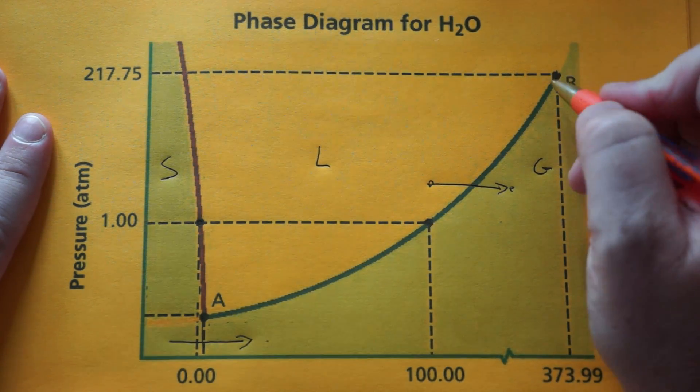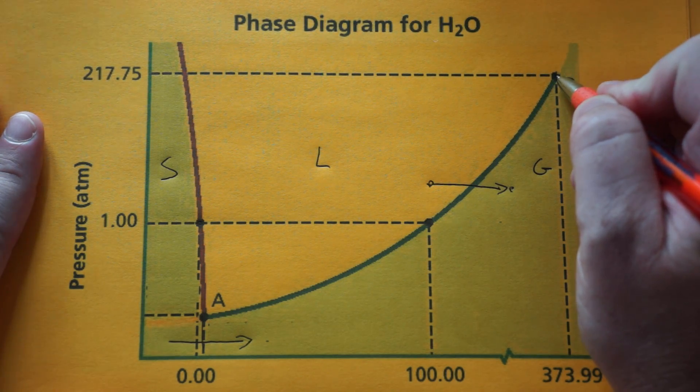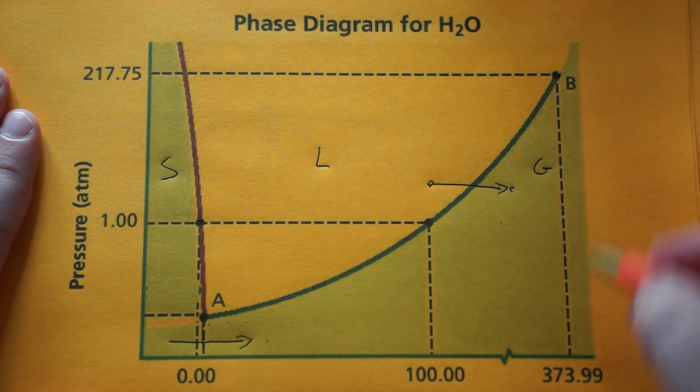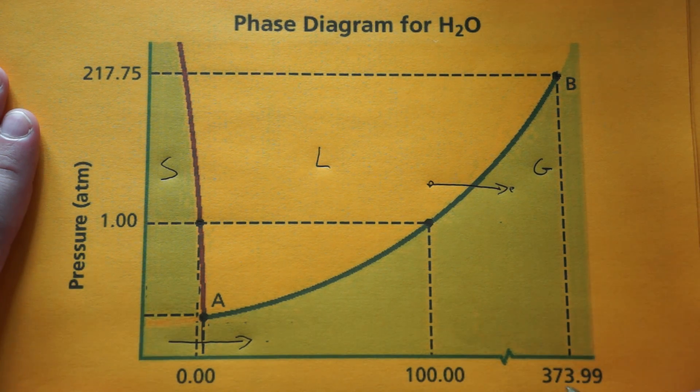Two other points you need to know. This is called the critical point. You have the critical pressure, which is 217, and the critical temperature, which is roughly 374.